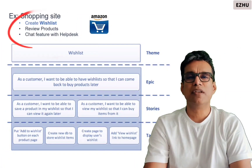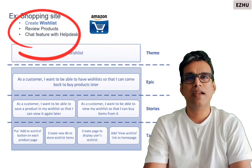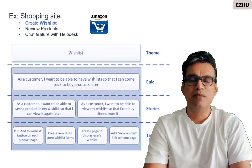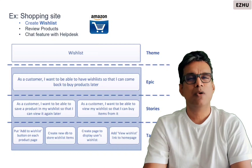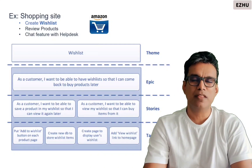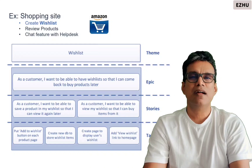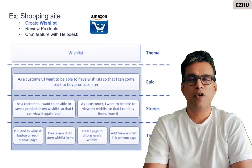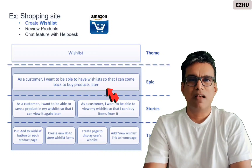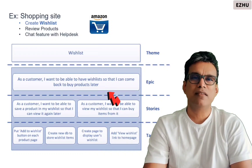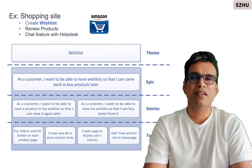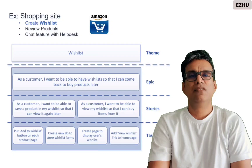In this shopping site, I want to implement certain features: a wish list where I can view products, add them to my wish list, and purchase them later. Another feature is product reviews by users, and a third feature is a chat service with support. Taking the wish list as an example — as a customer I want to view products, add them to my wish list, come back on a later date and purchase them. This is called an epic.